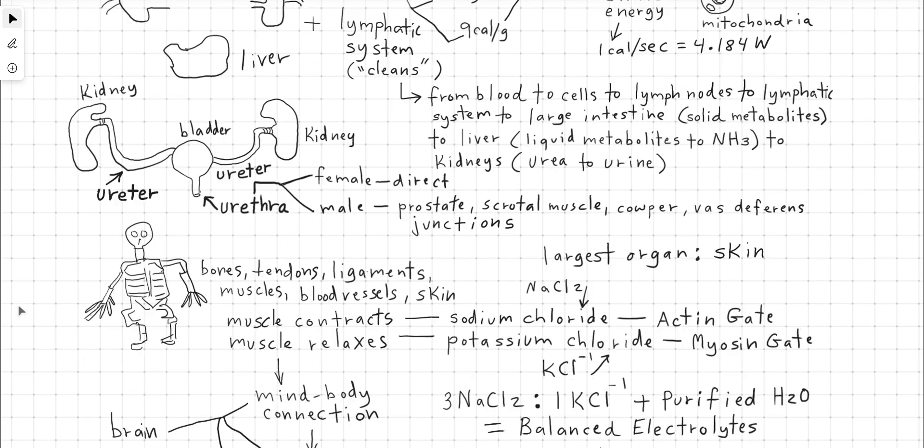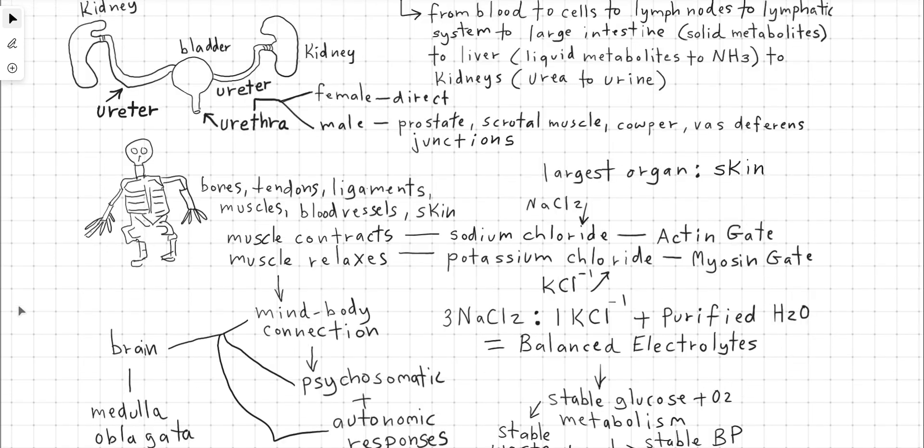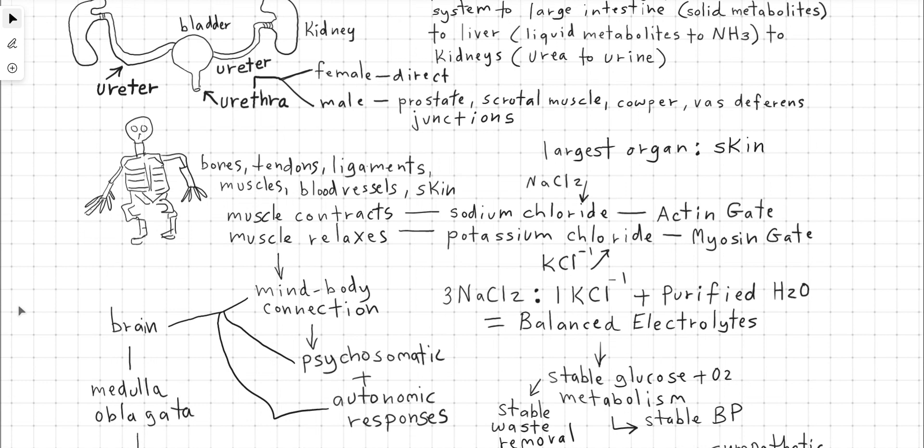Next we move on to the bones, tendons, ligaments, muscles, blood vessels, and skin. Note that the skin is the largest organ in the body. The muscles in the body, they contract and relax because of sodium chloride, causes the muscles to contract, including the heart, through the actin gates. And the potassium chloride allows the muscles to relax, including the heart, through the myosin gate.